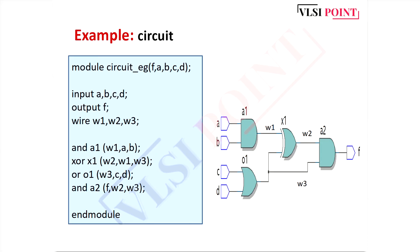One more example: in this circuit, and, or, and xor gates are there. You can see how to write the Verilog code. Start with module, then module name, output and input ports, specify all input and output ports. Three wires w1, w2, and w3 are taken. Then: and gate with instance name a1, xor gate with instance name x1, and or gate and and gate. These are very simple examples and I hope today's video is clear to you.